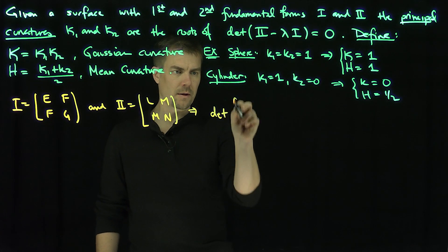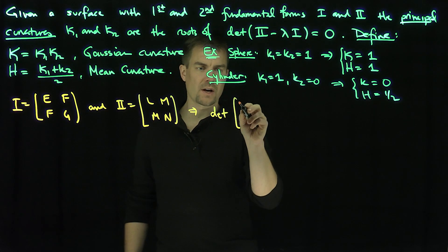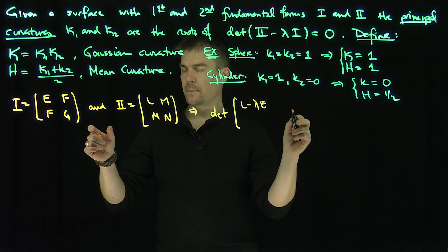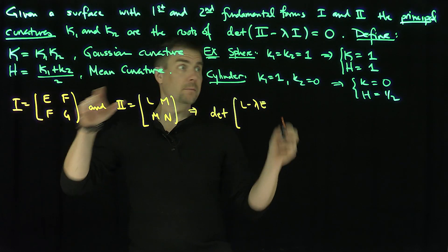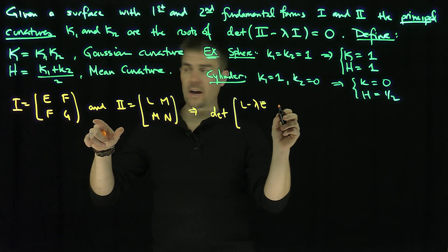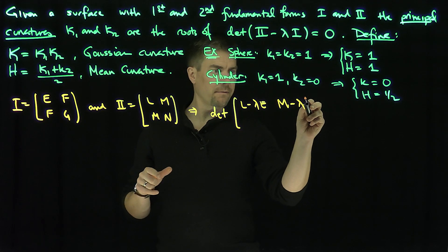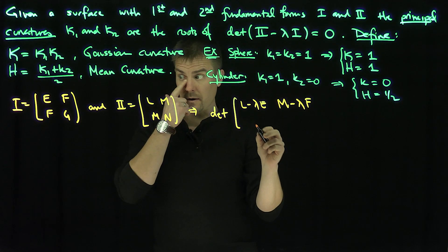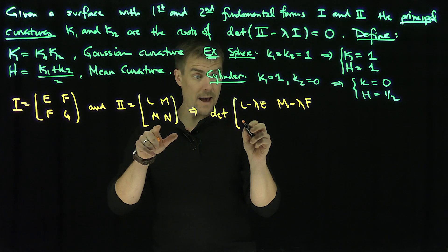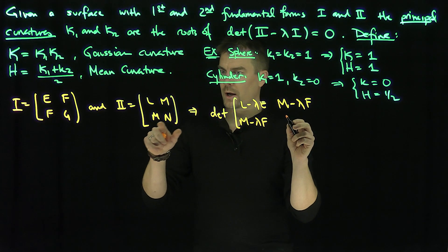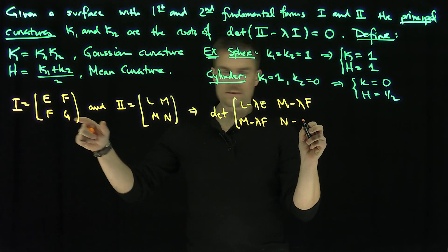So let's do a little bit of algebra. If I set determinant, I have 2 minus lambda 1. So I have L minus lambda E, then it's 2 minus lambda times I. So then I'm going to have an M minus lambda F. Then another M minus lambda F again, symmetric. And then an N minus lambda G.